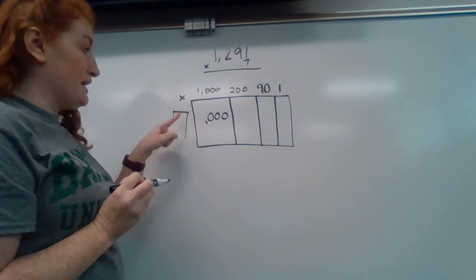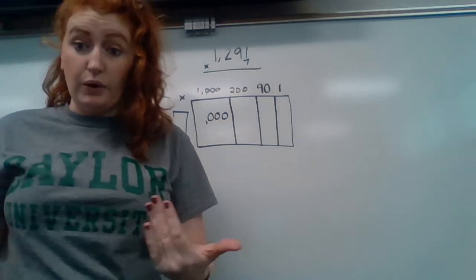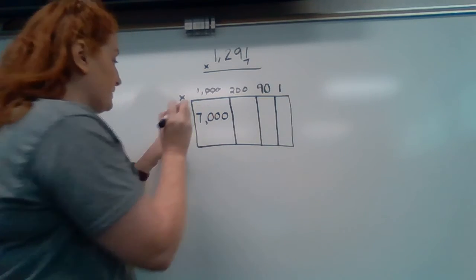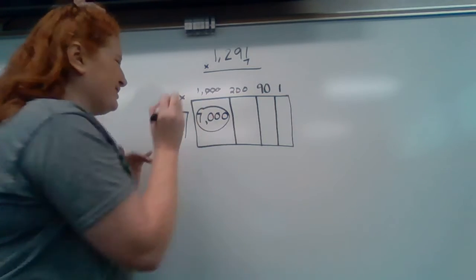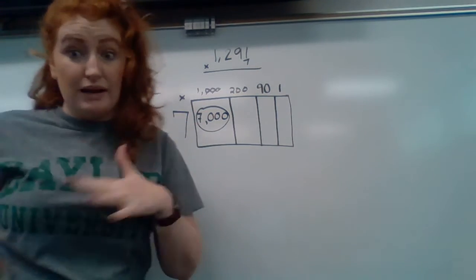I can look at numbers that I know: seven times one. I know that is seven. So seven times 1000 is 7000. So I'm done here. And I circle it just because I like to know that I'm finished.